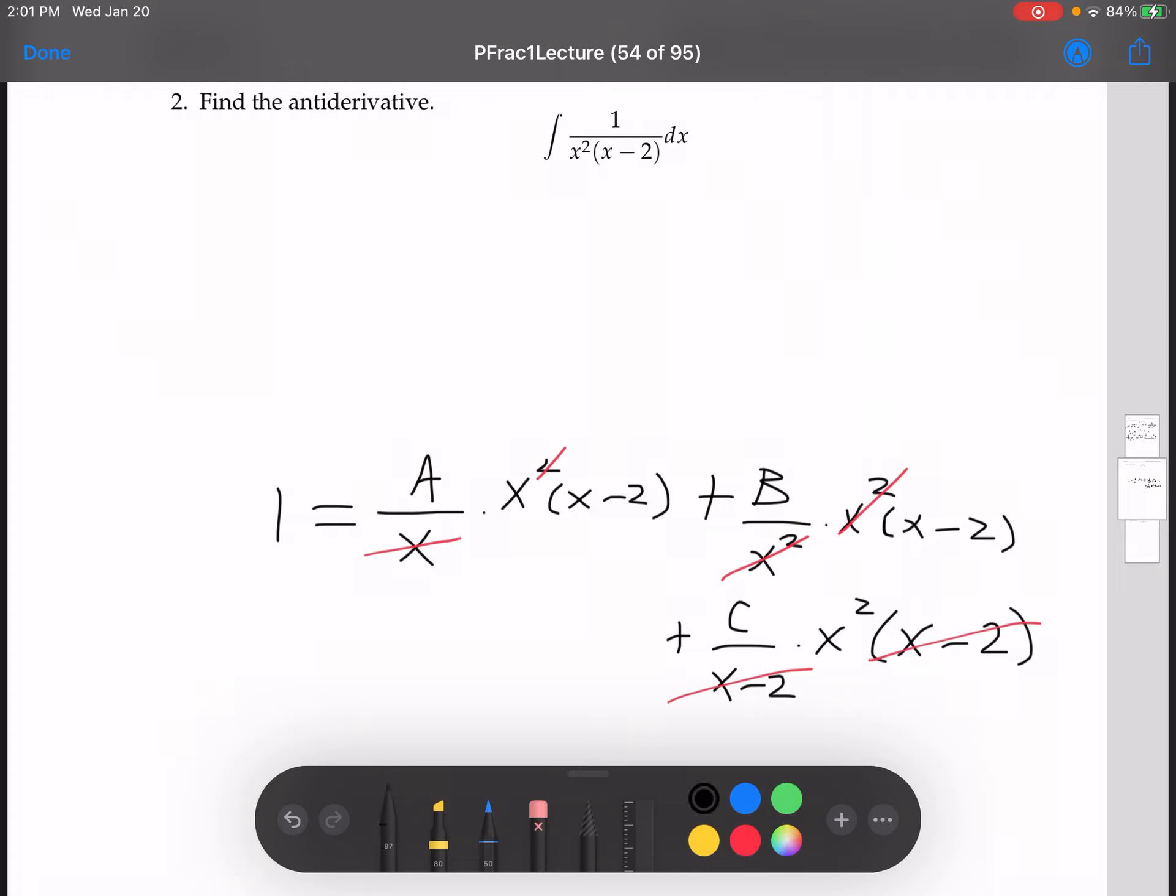And we're left with, let's see, 1 equals A times x times x minus 2, plus B times x minus 2, plus C times x squared.